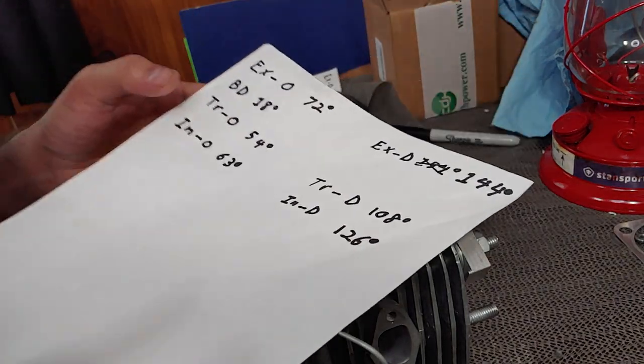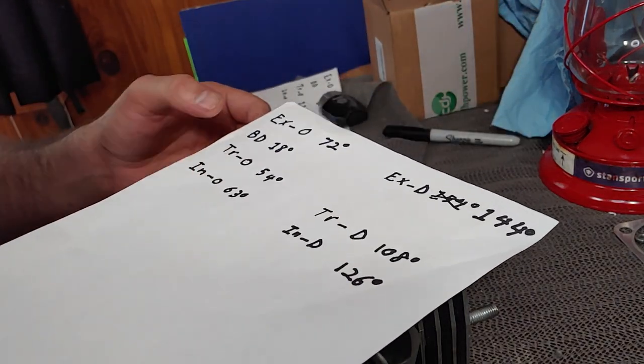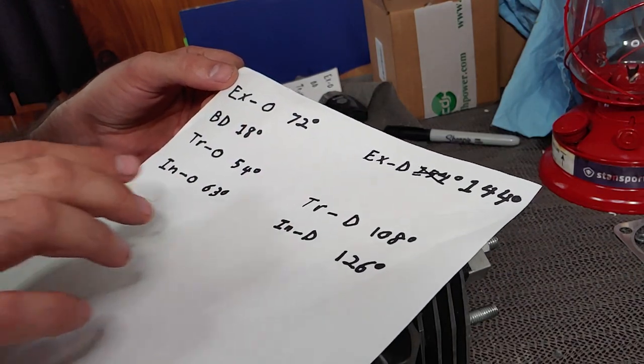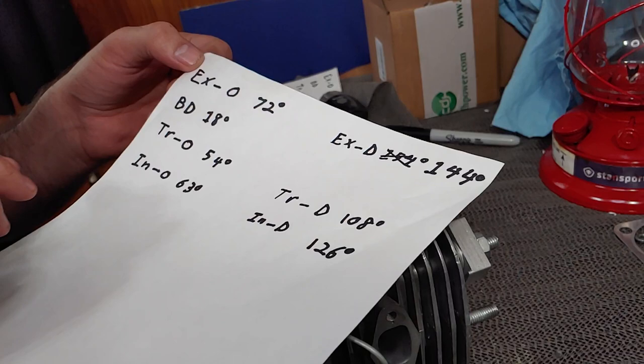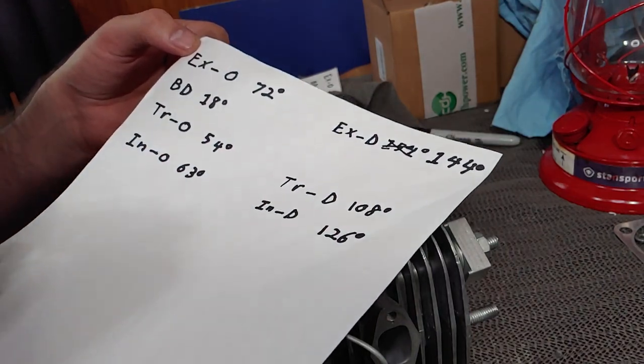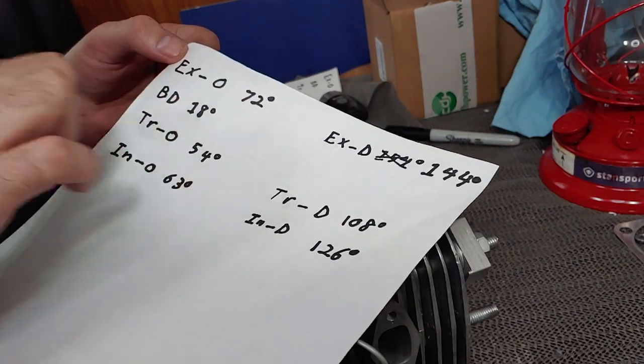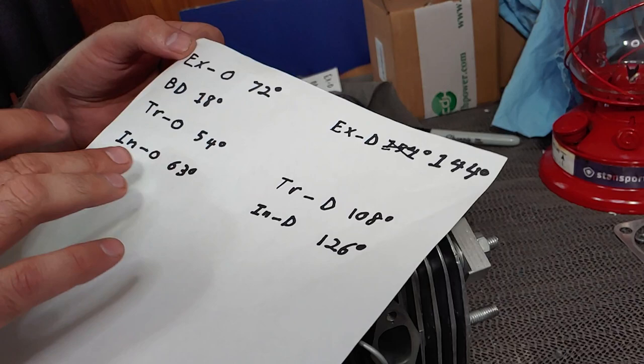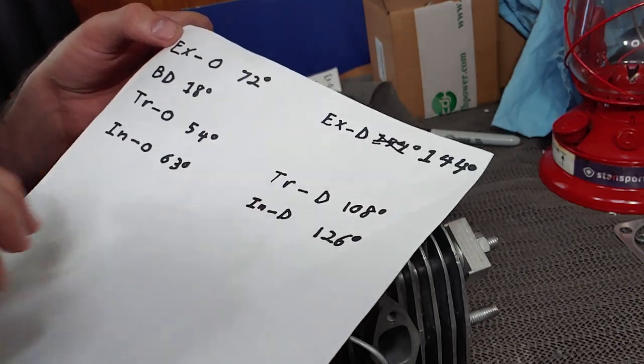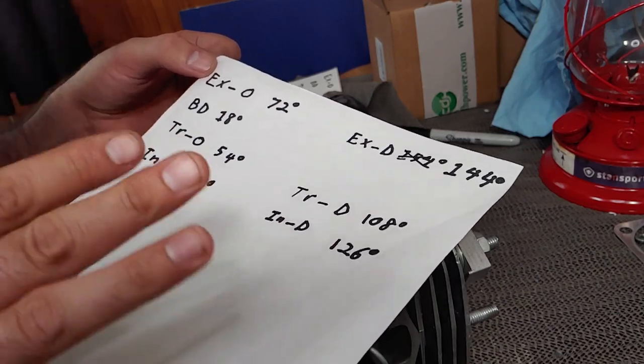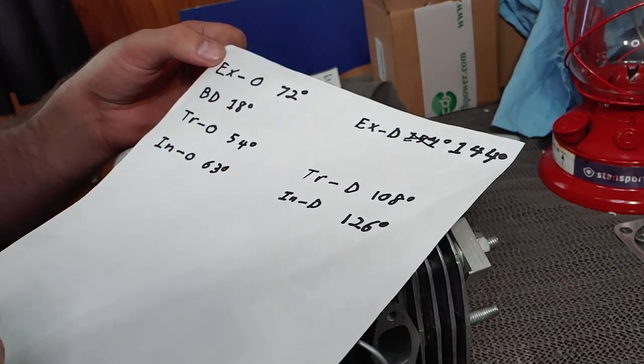So assuming I did it right this time we have exhaust opening at 72 degrees, duration of 144 degrees. Transfer opening at 54 degrees, duration of 108 degrees. Giving us a blow down of 18 degrees. Intake opening at 63 degrees, duration 126 degrees. I think we're good this time. Yeah so we're good.